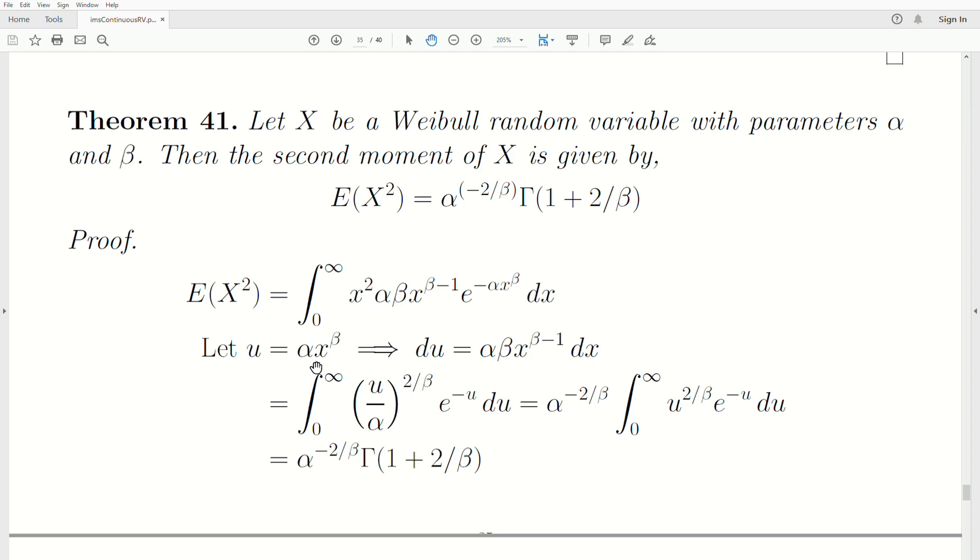We do a U substitution, which is the exponent here. It's the same U substitution we did before. Then DU is this. Everything gets substituted in, but for the X, we have to back solve for X in this expression. We get U over alpha raised to the 2 divided by beta. The alpha can come out front.